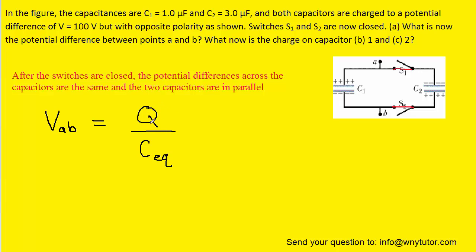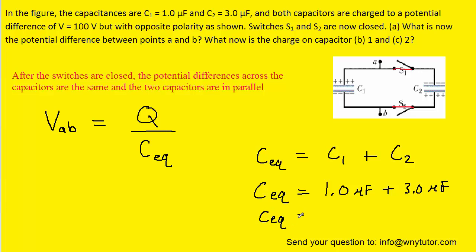Note that capital Q is the net charge on both of the capacitors. We can find the expression for C_EQ by following the rules for parallel capacitors. Those rules dictate that the equivalent capacitance is simply the sum of the individual capacitances. Those individual capacitances were given in the question, so we can sum them and see that the equivalent capacitance is equal to 4 microfarads, or 4 times 10 to the minus 6 farads in standard units.